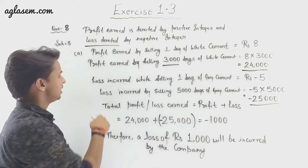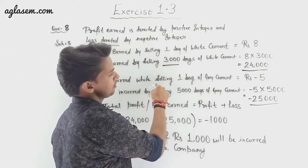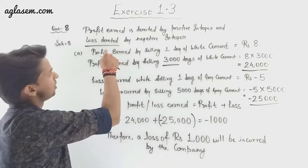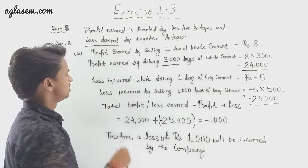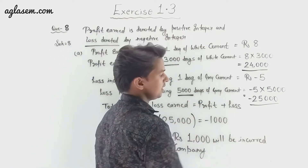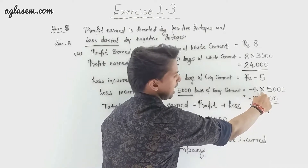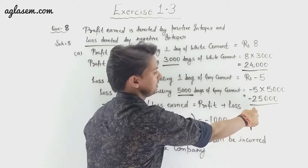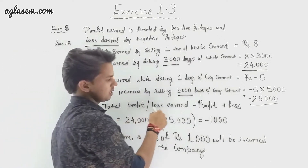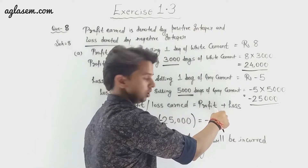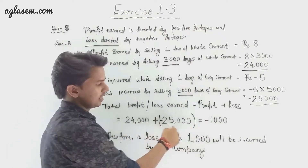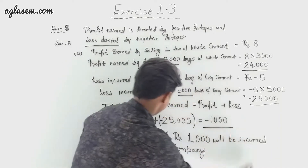Loss incurred by selling one bag of grey cement is minus 5 rupees. Loss incurred by selling 5000 bags of grey cement is minus 5 multiplied by 5000, which equals minus 25,000. Total profit or loss is 24,000 plus minus 25,000, which equals minus 1,000.